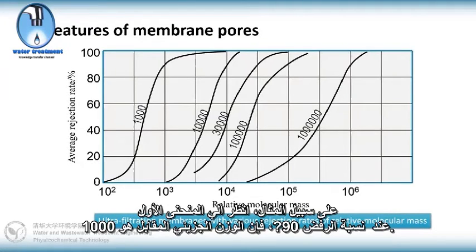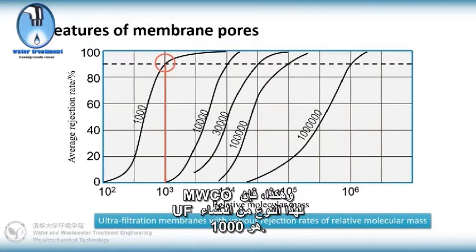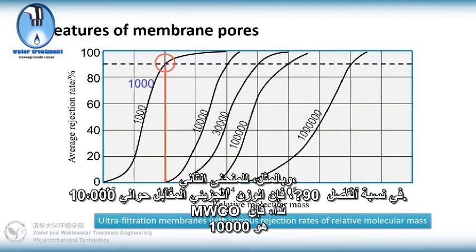At the rejection rate of 90%, the minimum relative molecular weight is the MWCO of the tested membrane. For example, look at the first curve: at the rejection rate of 90%, the corresponding molecular weight is 1000, so the MWCO of this UF membrane is 1000. Similarly, for the second curve, at 90% rejection the corresponding molecular weight is about 10000, so the MWCO is 10000.